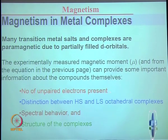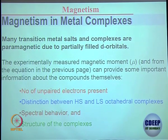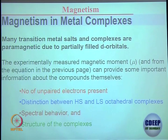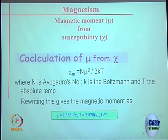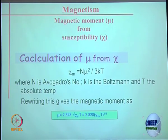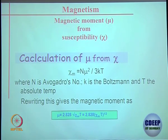Measuring the magnetic moment value of an unknown complex can tell you the number of unpaired electrons present, whether it is high spin or low spin, the spectral behavior, and even something about the structure of the complex. The two equations are related through kappa (I/H), which when divided by density gives gram susceptibility, and when multiplied by molecular weight gives molar susceptibility. As long as you know the relationship between these two equations, you are good to go.